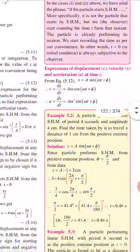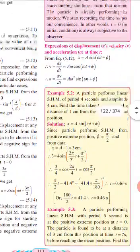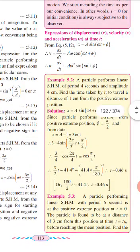Let's now write the expressions together. Displacement: X equals A sin(ωt + φ). Velocity: V equals dX/dt equals Aω cos(ωt + φ). Acceleration: rate of change of velocity gives minus Aω² sin(ωt + φ). If you are strong in mathematics, physics becomes easier, and if you are good in physics, maths becomes easier — these two subjects go hand in hand. You need to know all trigonometric formulas and the rules of differentiation and integration to follow these derivations.